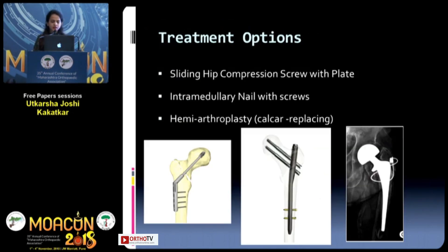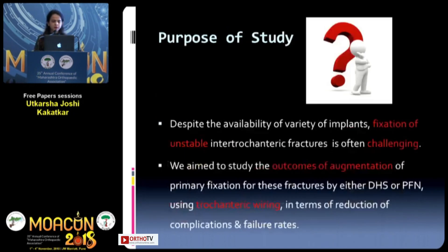Treatment options are the sliding hip screw with plate, intramedullary nail, and hemiarthroplasty with calcar replacement. Despite the availability of a variety of implants, fixation of unstable IT fractures is often challenging. We aim to study the outcomes of augmentation of primary fixation for these fractures by either DHS or PFN using trochanteric wiring, in terms of reducing the complications and failure rates.